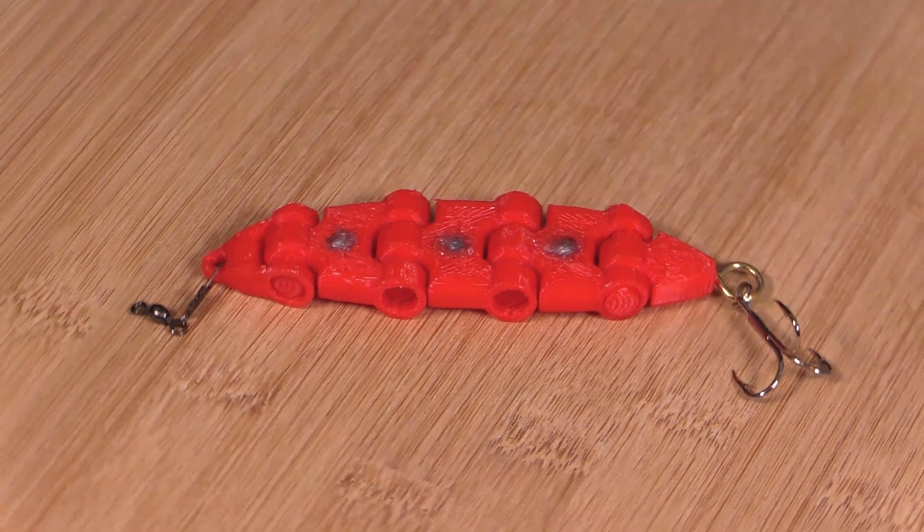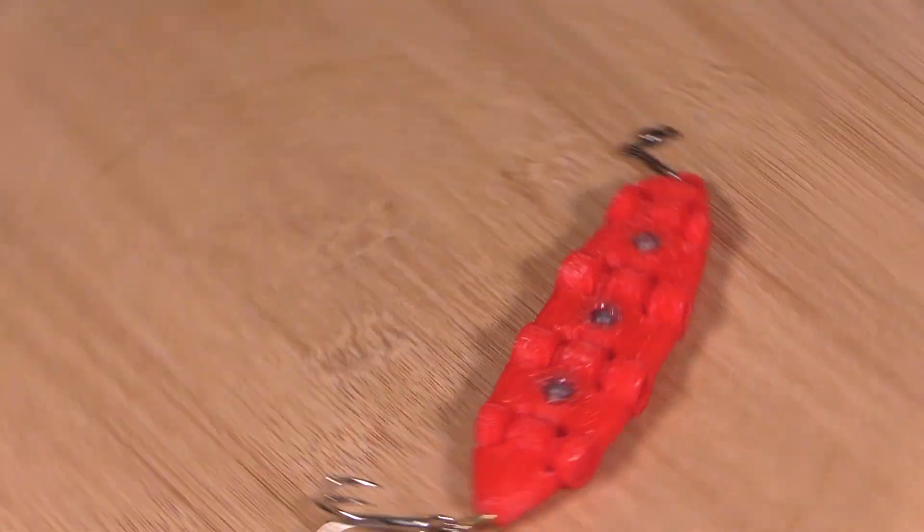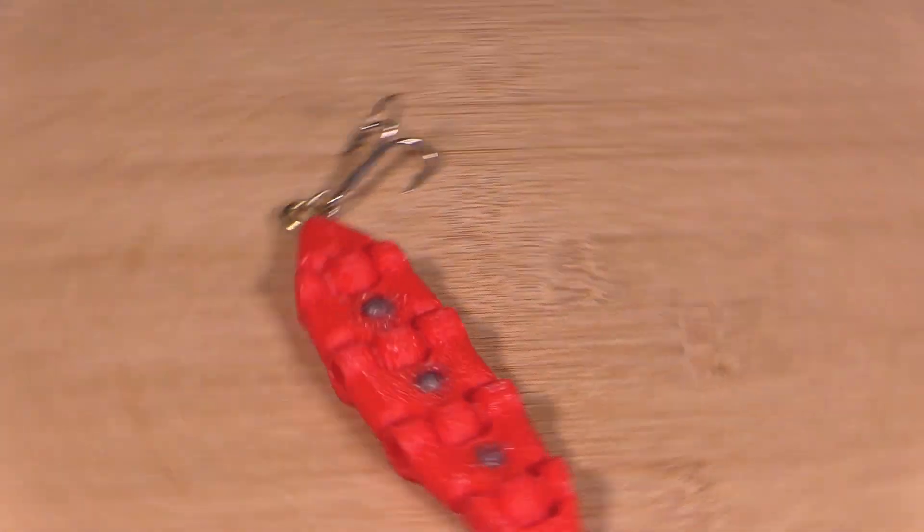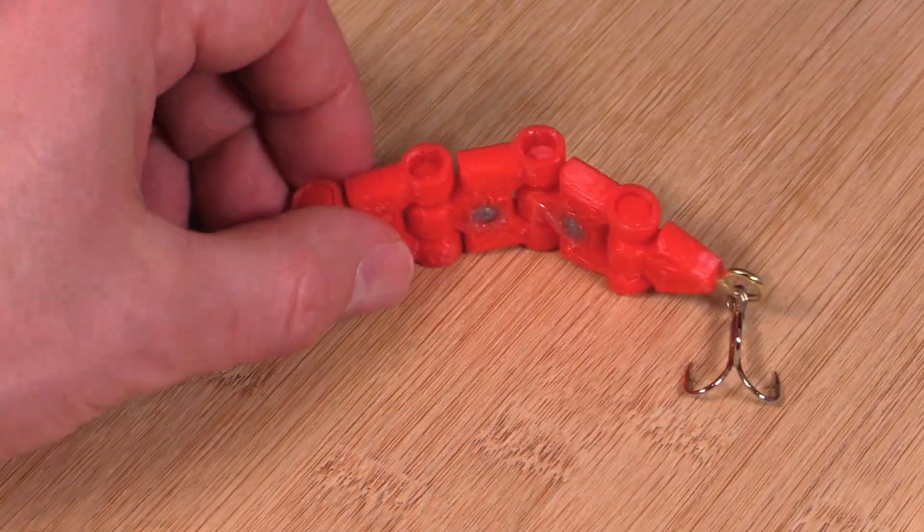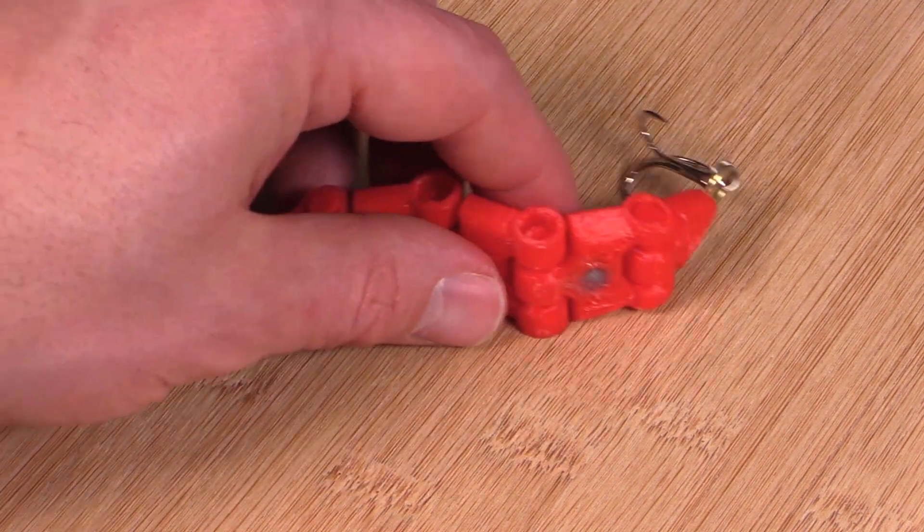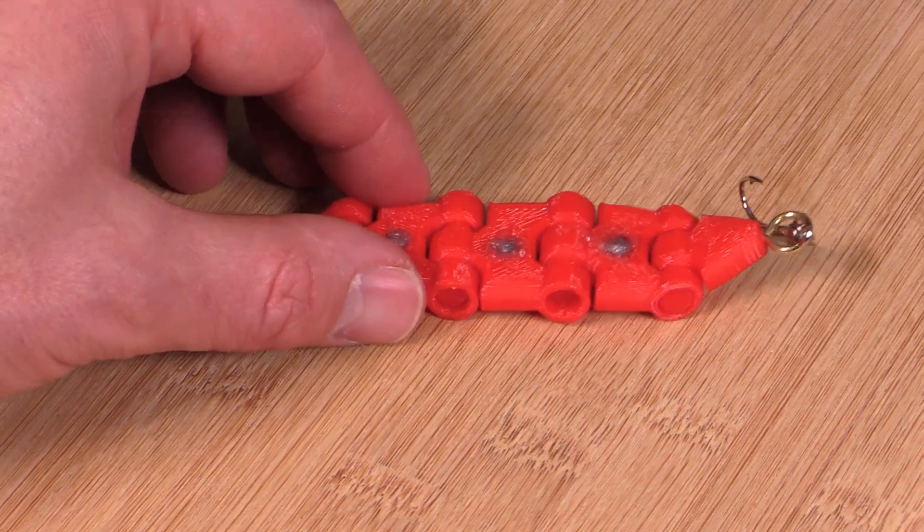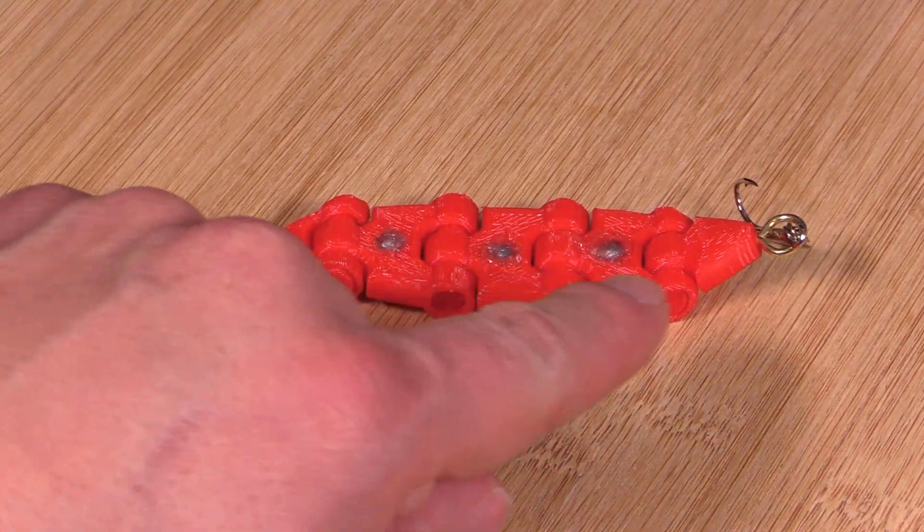Alright, here we have a fishing hook. This is for a buddy that obviously likes fishing. It's kind of an interesting design. It, of course, hinges here, so it kind of has this snaking effect. And I've drilled and added some weights here too.